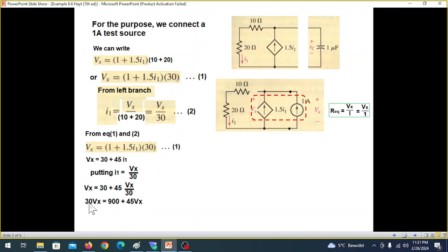So putting that and taking, multiplying by 30. Then from here, we move this to the left-hand side and move this to the right-hand side.